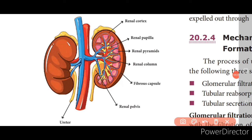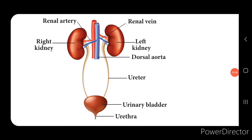From the hilum emerges a thin muscular tube called the ureter, which carries urine from the kidney to the urinary bladder. The urinary bladder is a sac-like structure present in the pelvic cavity of the abdomen that stores urine temporarily. Below the urinary bladder is the urethra — a small membranous tube that expels urine. There is a urethral sphincter that keeps the urethra closed and opens only during urination, which is called micturition.